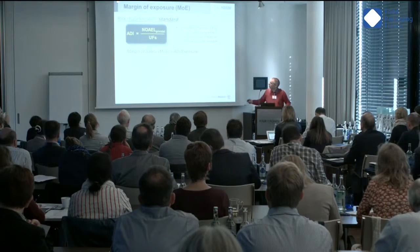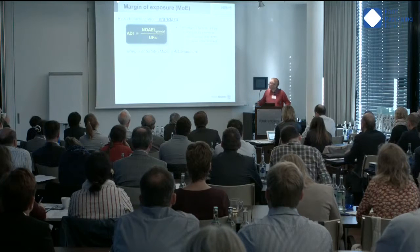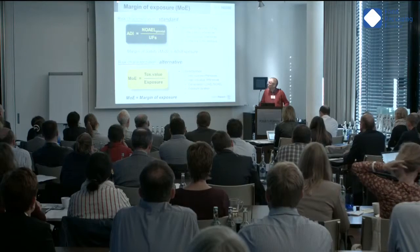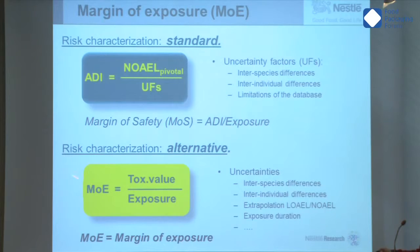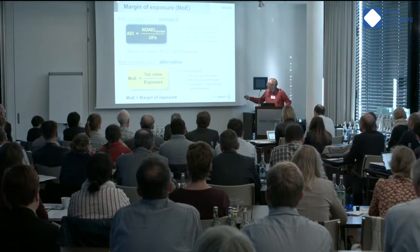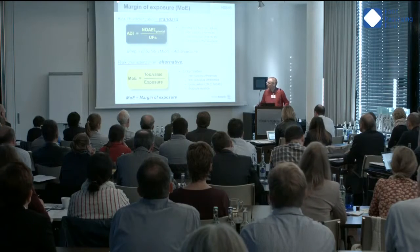If you have an exposure which is lower than the ADI — so a margin of safety which is higher than one — you will have relatively low concern and low priority for further testing. Now, if you don't have any safe level of exposure in humans, you do a margin of exposure: you take the toxicological value that you have, divide by the exposure, and the level of concern depends upon the size of this margin of exposure. The higher it is, the lower the concern, and this margin should at least cover the classical uncertainties.